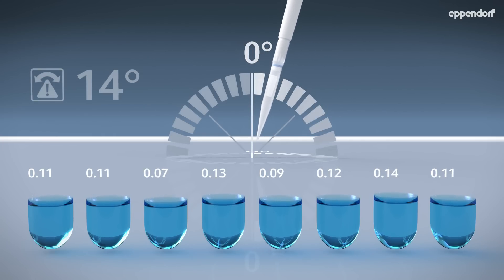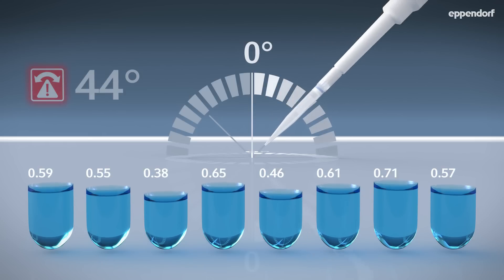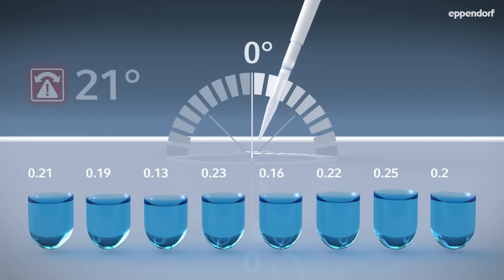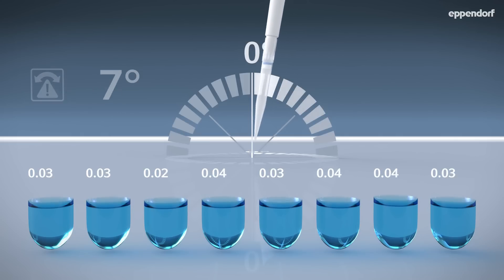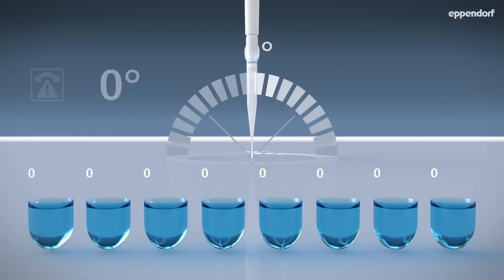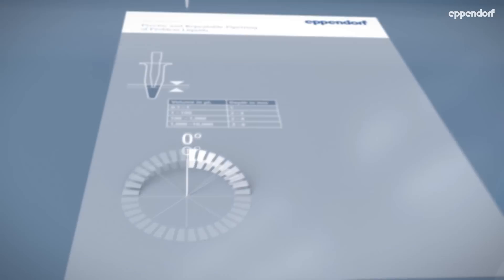The more you tilt the pipette, the more liquid you'll dispense. It's difficult to control this effect, since the variations are too small to see with the naked eye. For best results, just keep the pipette as vertically as possible.